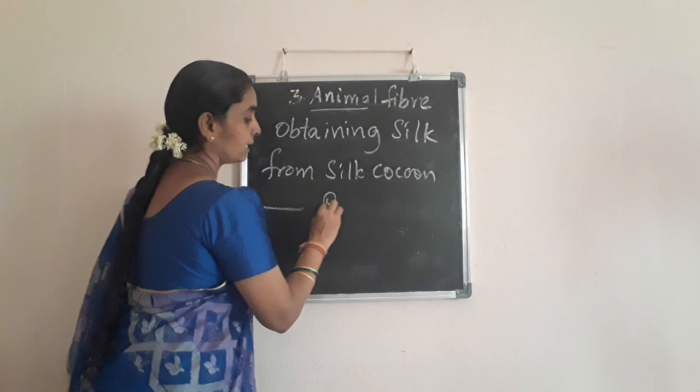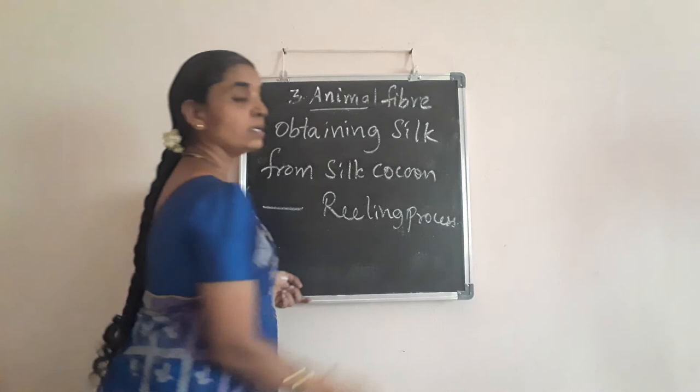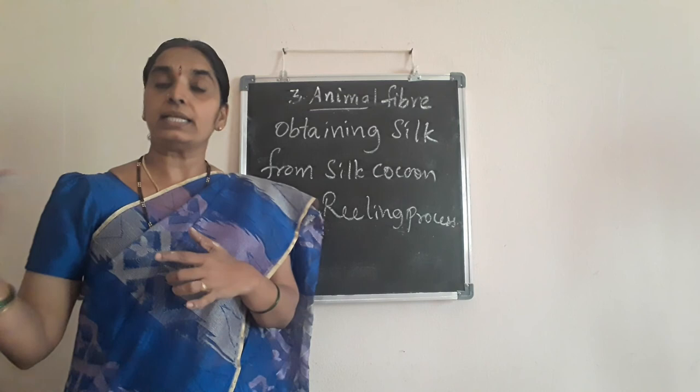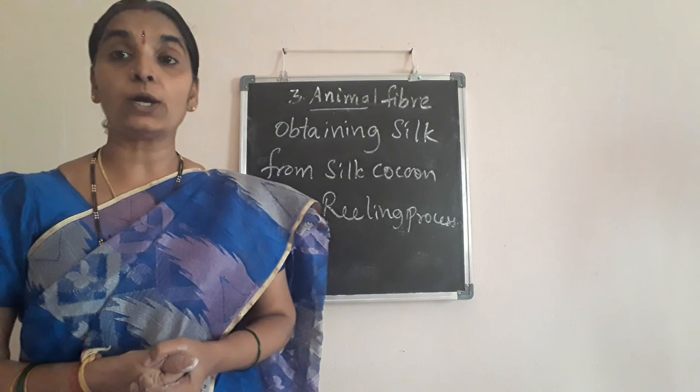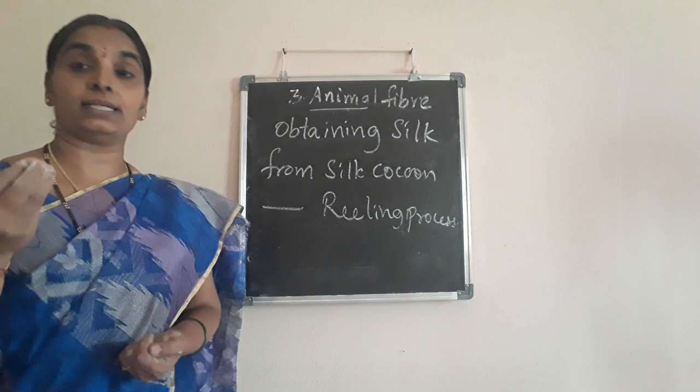After the reeling process, the silk weavers take the silk thread, reel it over the reeling machines, and weave the silk cloth. This is how the manufacture of silk cloth is done. I hope you have understood the lesson clearly. Draw the life cycle of silkworm in your notes and be ready for the next class. Thank you very much. Bye, children.